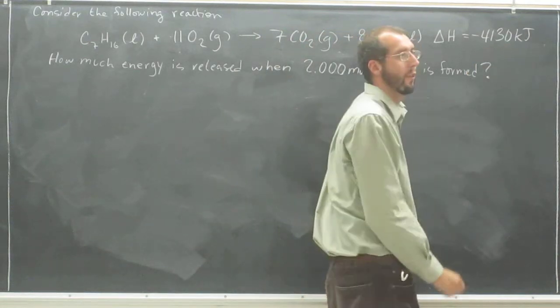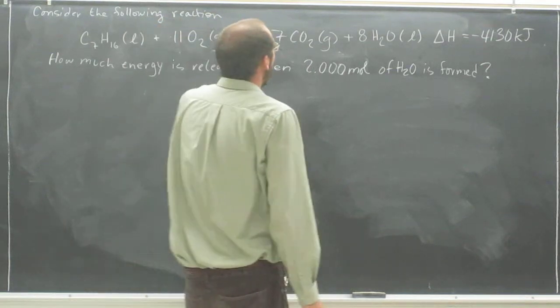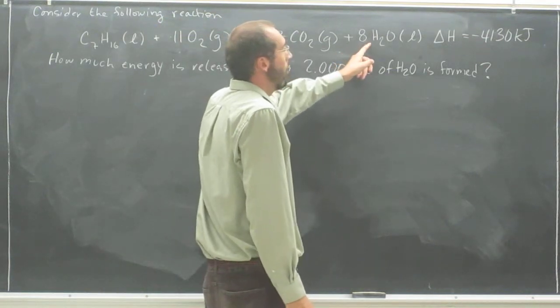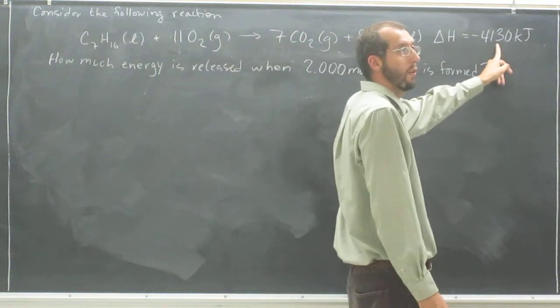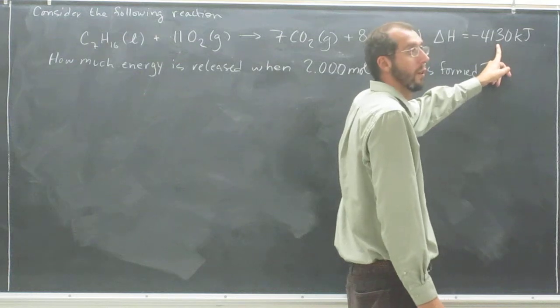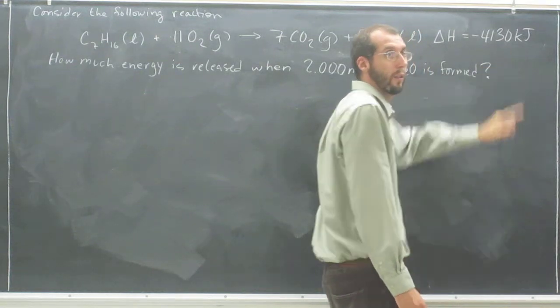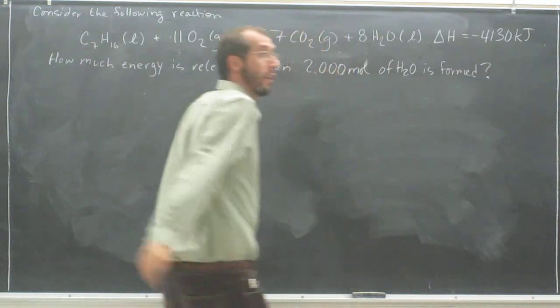For every negative 4,130 kilojoules, for every 8 moles of water you produce, you produce also negative 4,130 kilojoules. So every 8 moles of this you produce, you produce that much heat.